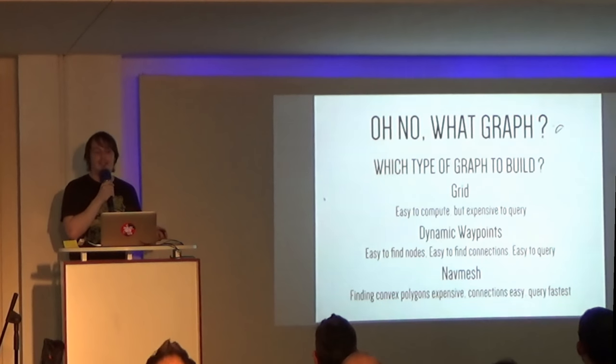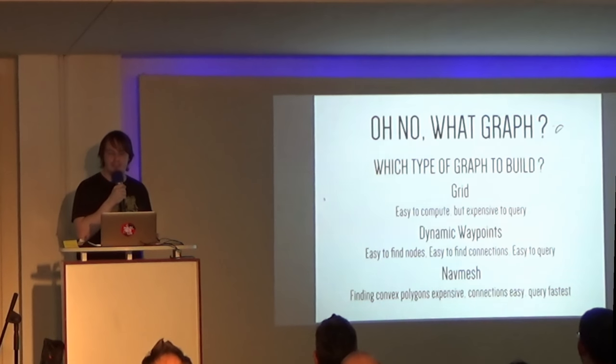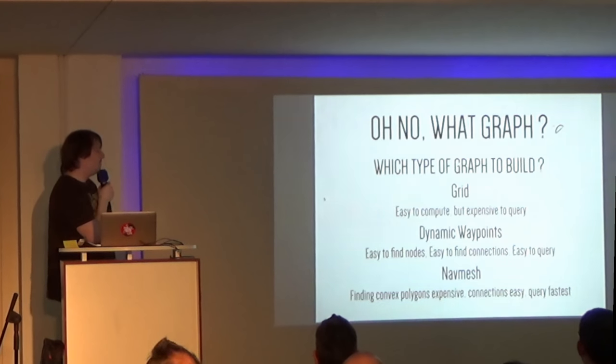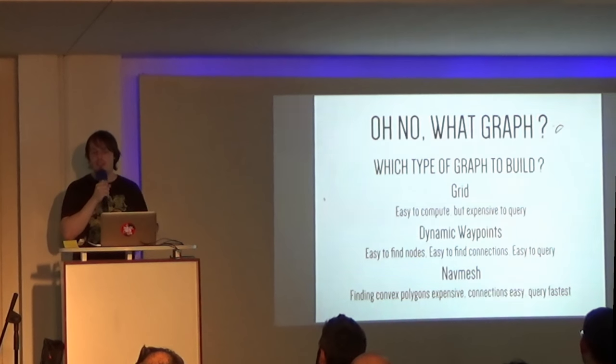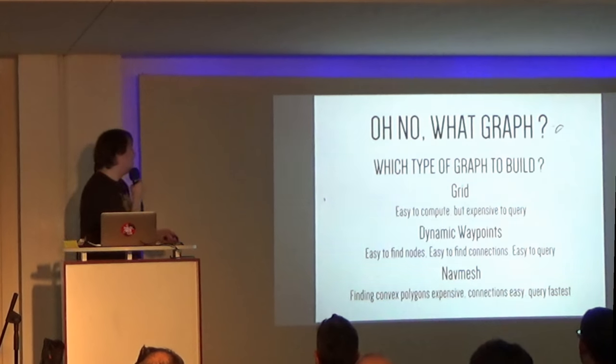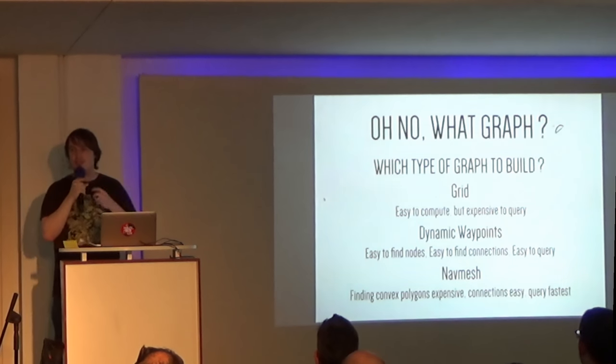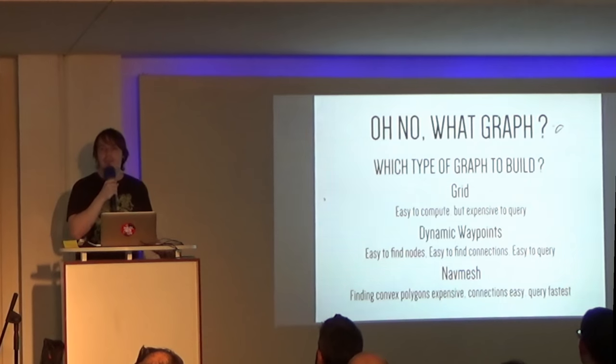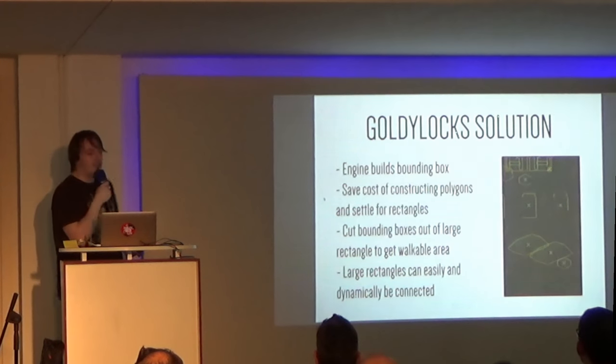So then the last option is nav meshes. Once again, everyone loves nav meshes. They should love nav meshes. And what's complicated about this is figuring out the polygons. If you want to do proper nav meshes, you need to build the geometry. So you get perfectly fitting polygons with a maximum of n edges, and otherwise you subdivide them. And it's becoming really complicated. But connecting things is easy because you just connect what's next to it. And it queries the fastest because you end up with the fewest nodes. And it has some additional benefits, like knowing distance to the nearest wall or something. So, we obviously went with nav meshes because nav meshes are great.